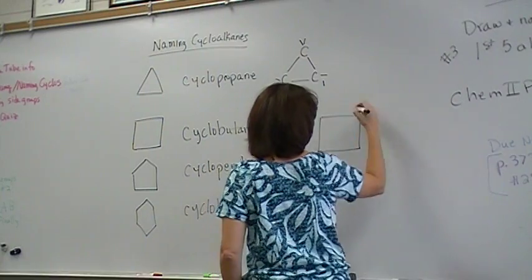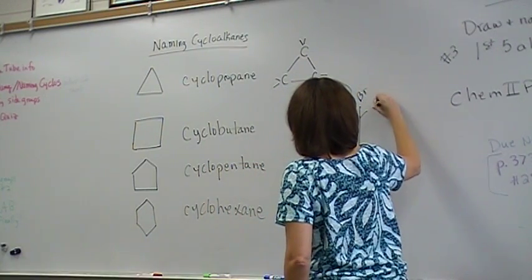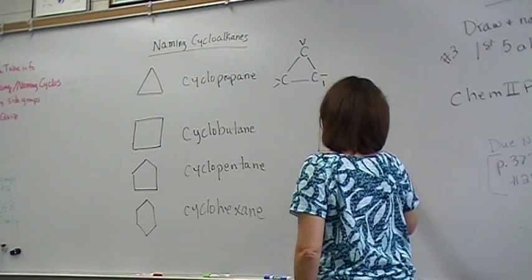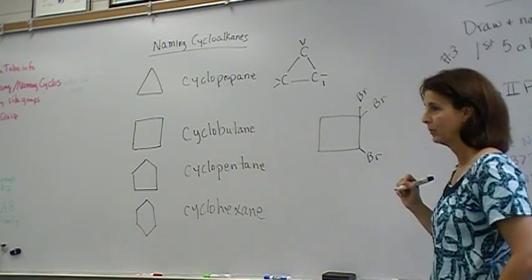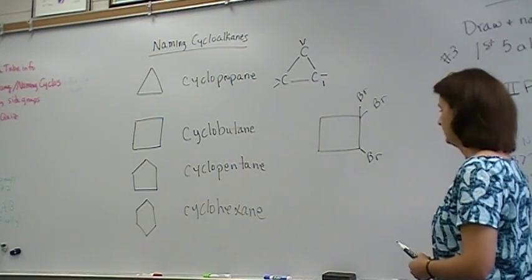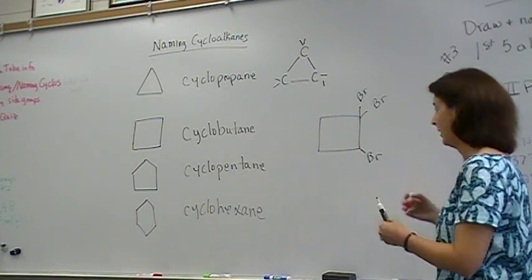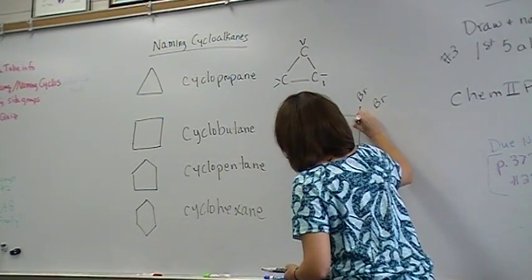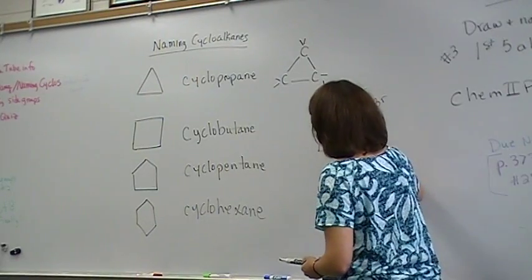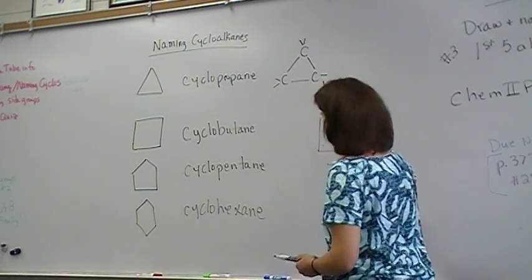So just say you've got this, Mr. Square, and I've got a Br, a Br, and a Br. Now you have to number the corners. That's up to you if you want to do that in your head or write it down. So you want to pick number one and go in whichever direction will give you the lowest total numbers.